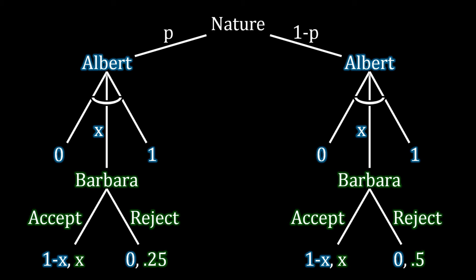This represents the fact that nature is still drawing whether Barbara is weak or strong, but Albert now has that information — he knows exactly what's going on. Solving for his payoff here is very trivial, because in each situation Albert is just playing a standard ultimatum game with Barbara having a different outside option on left versus right. With probability P, Albert is facing Barbara as the weak type: he offers her 0.25, Barbara accepts, and Albert keeps the remainder, which is 0.75. With probability 1-P, Albert knows he's facing the strong type, so he offers Barbara 1/2 and keeps 1/2 for himself.